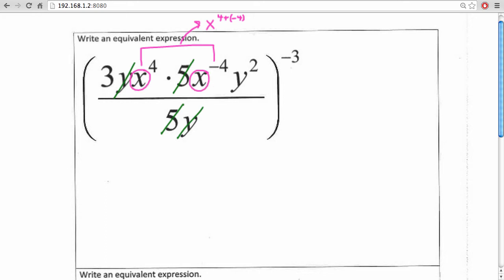Now when we combine these, this actually turns out to be x to the zero. And we know that anything to the zero power is 1. So these will simplify. All that we have left is 3y squared to the negative third.